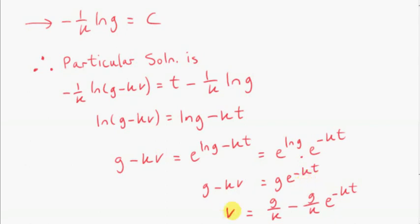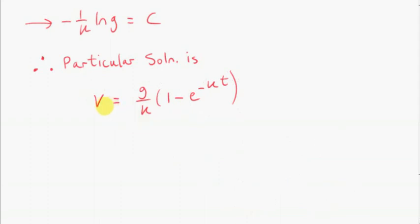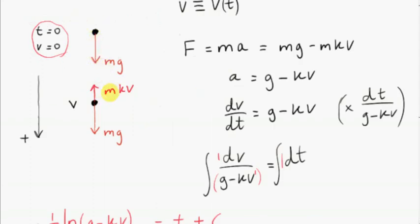At last, we have v as a function of time, where g and k are constants. We can factorize g over k out of this expression. Now we can see what happens as t increases indefinitely. Intuitively, we suspect the particle will reach some terminal velocity when the weight equals the resistance force.